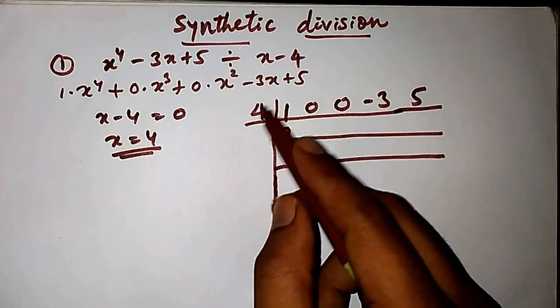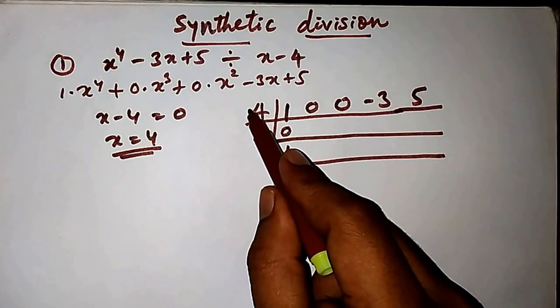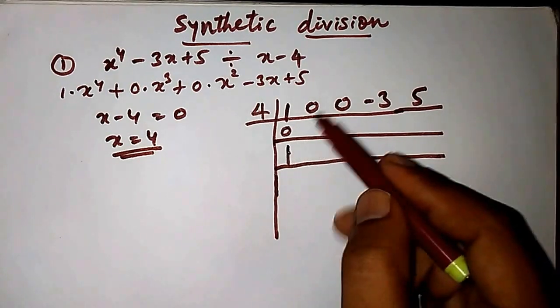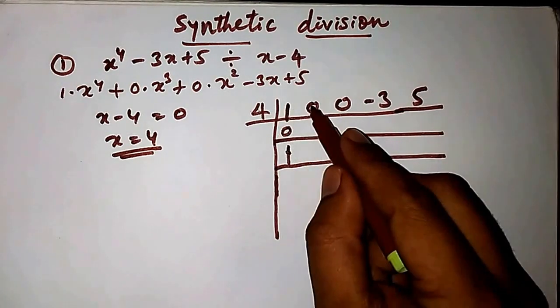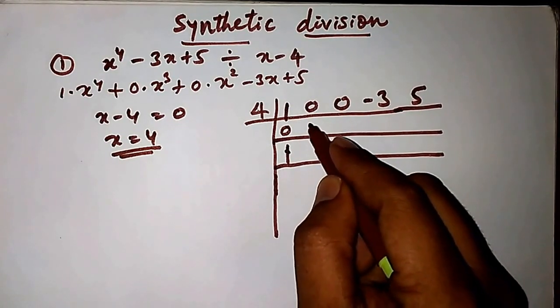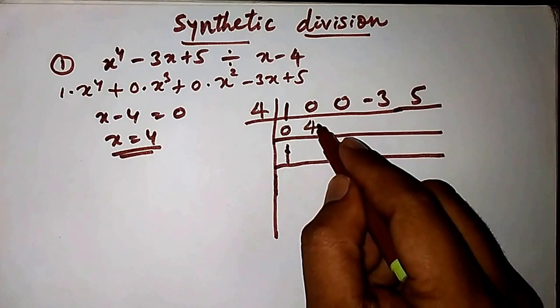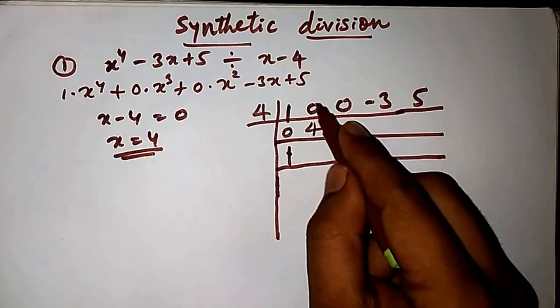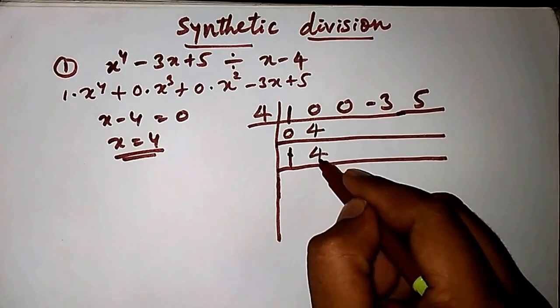Now multiply by 4: 4 times 1. Write this multiplied answer below the second coefficient. 4 ones are 4. Then add: 0 plus 4 is 4.